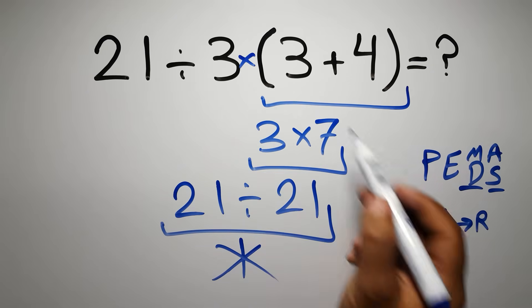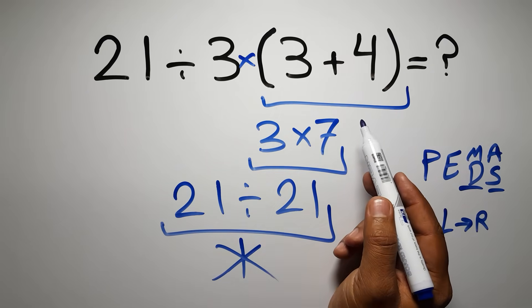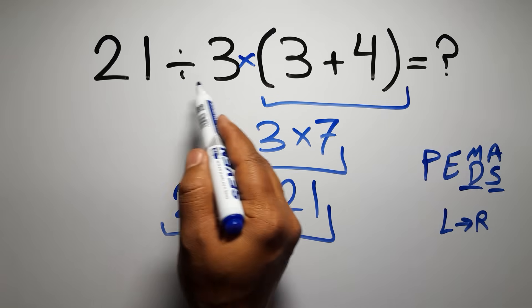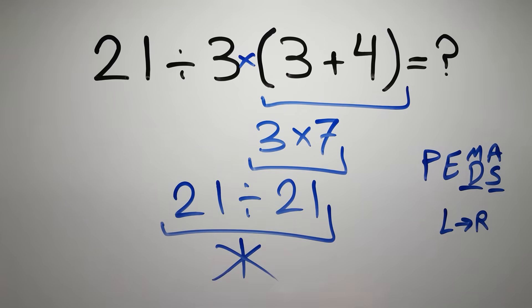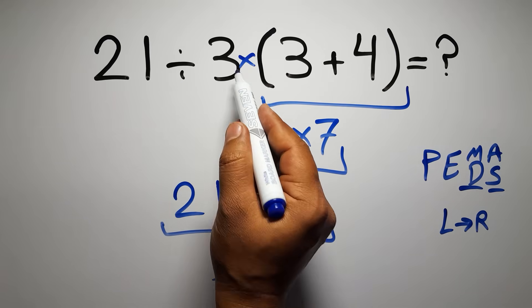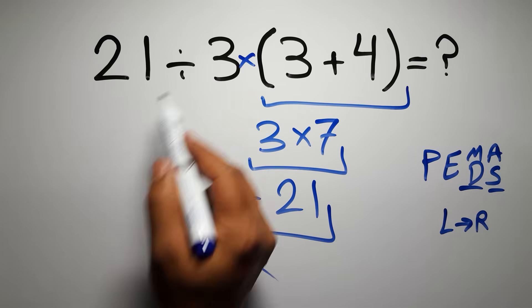So according to the PEMDOTS, first we have to do these parentheses, then this division, and finally this multiplication. If we do this multiplication before this division, it is wrong.